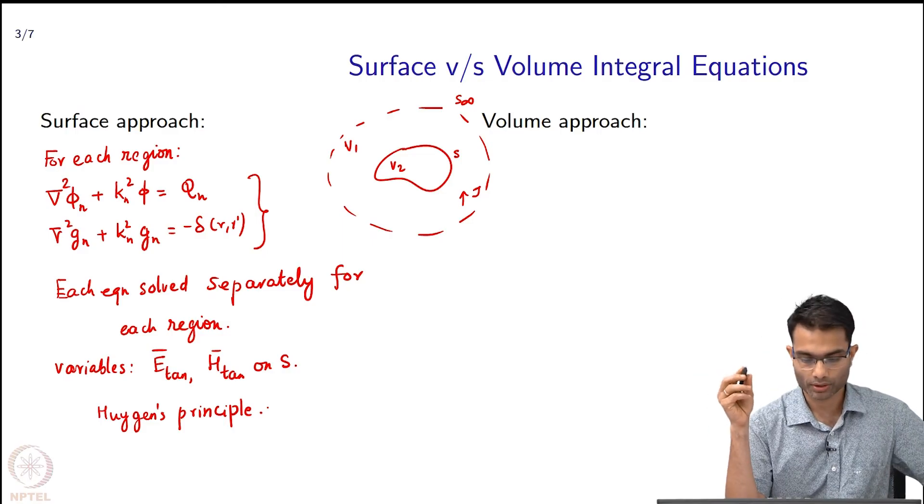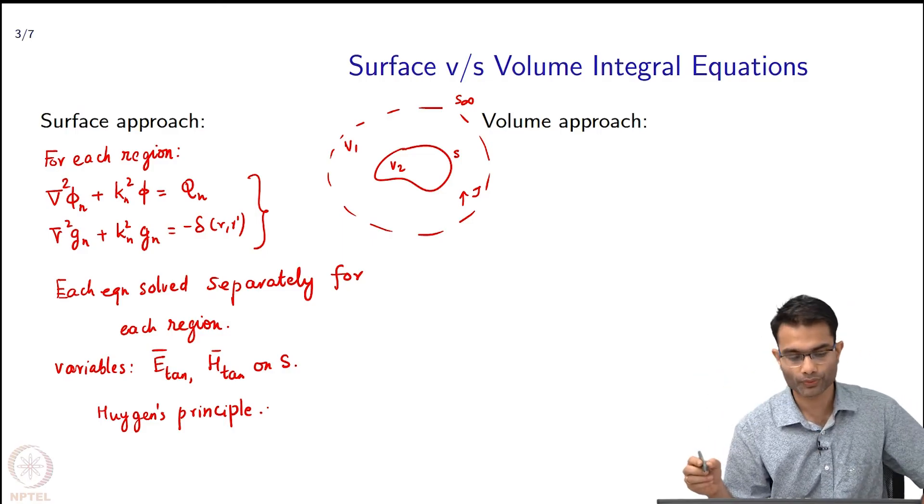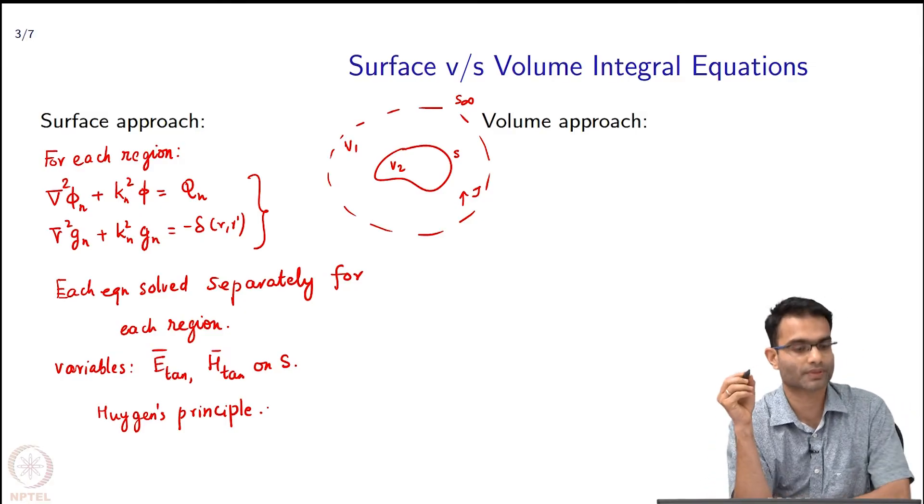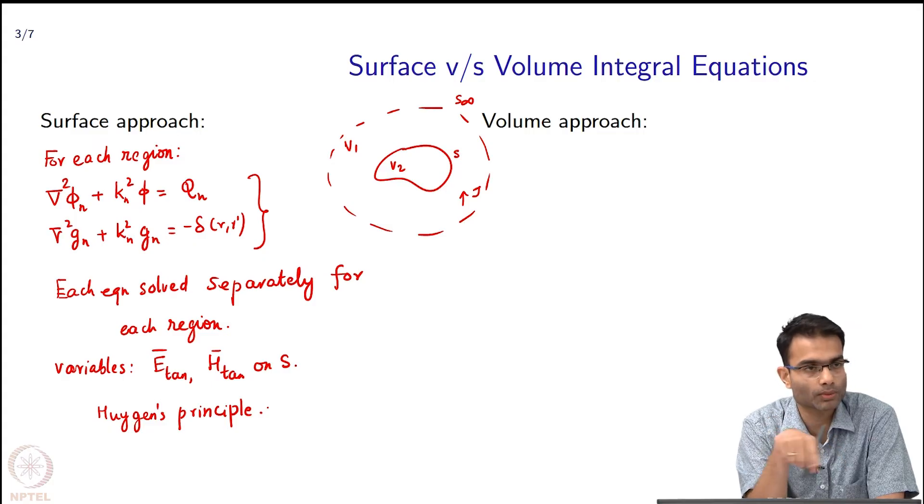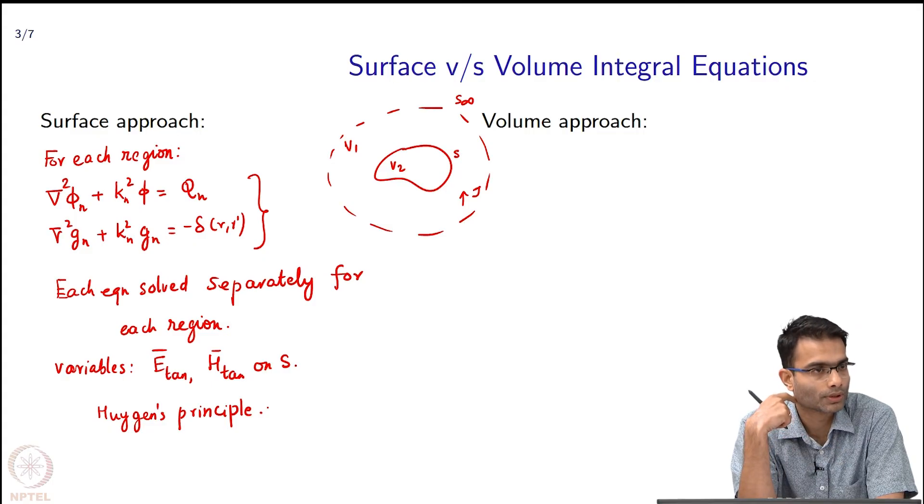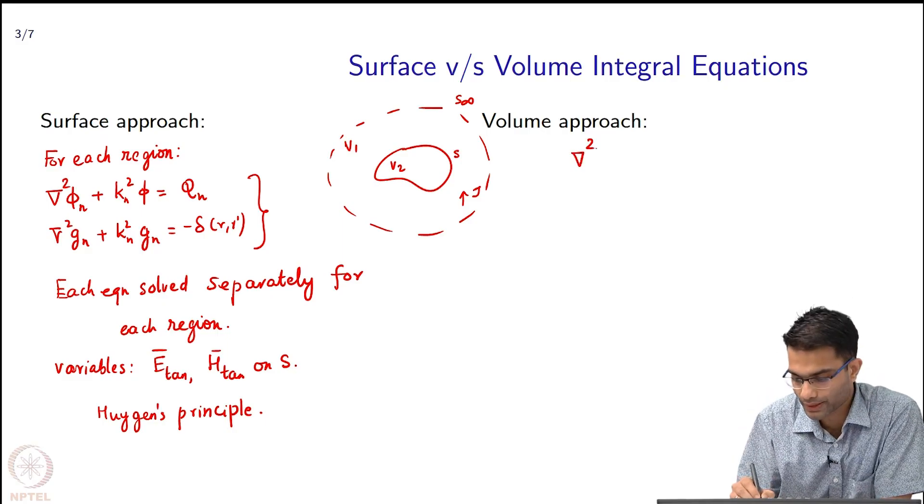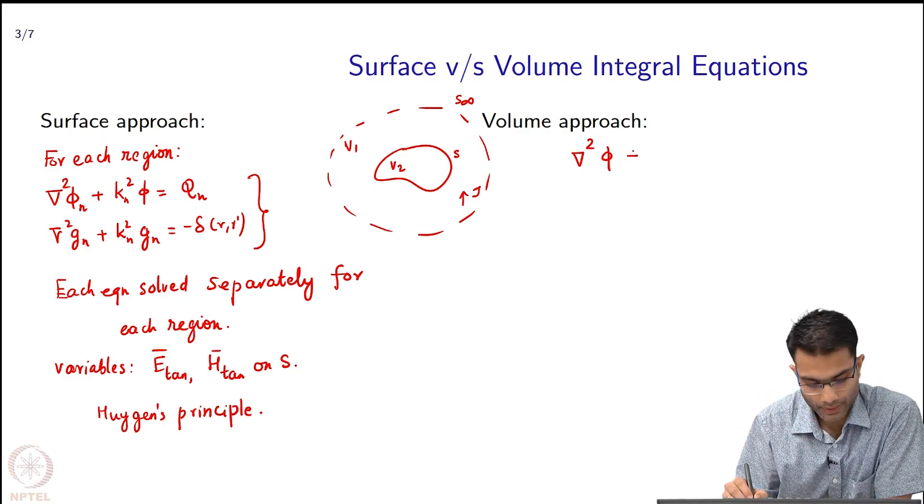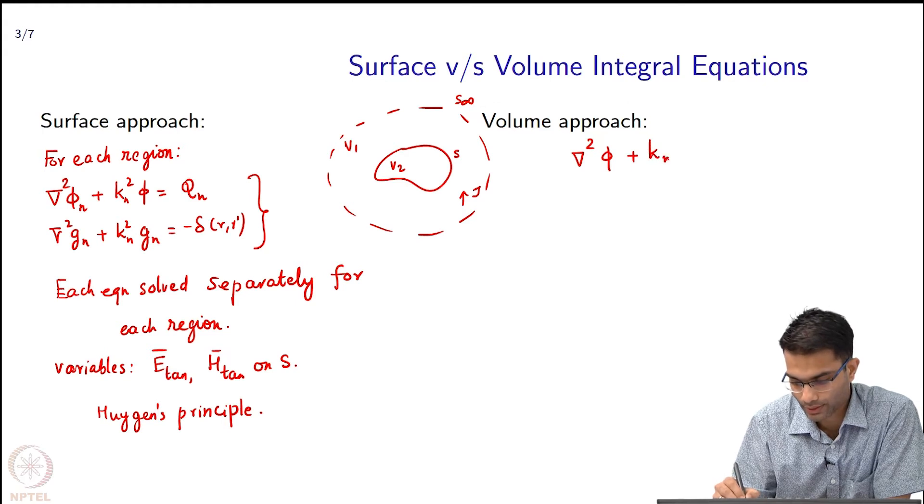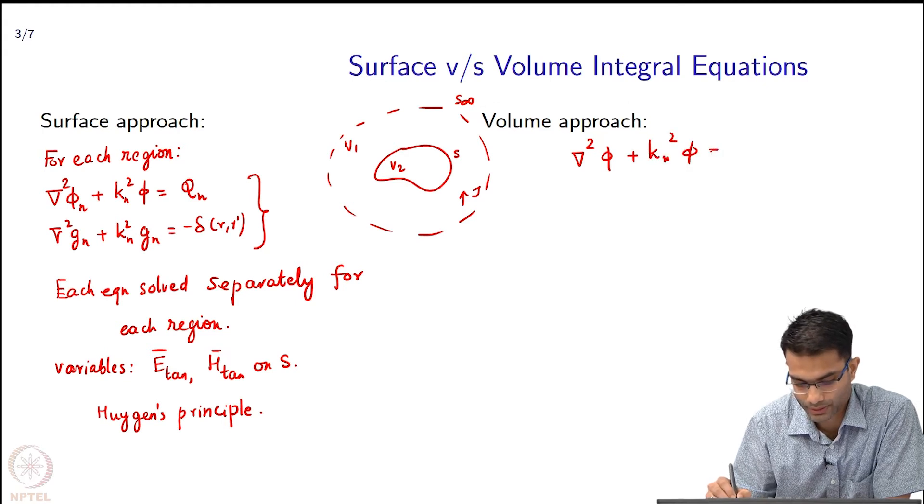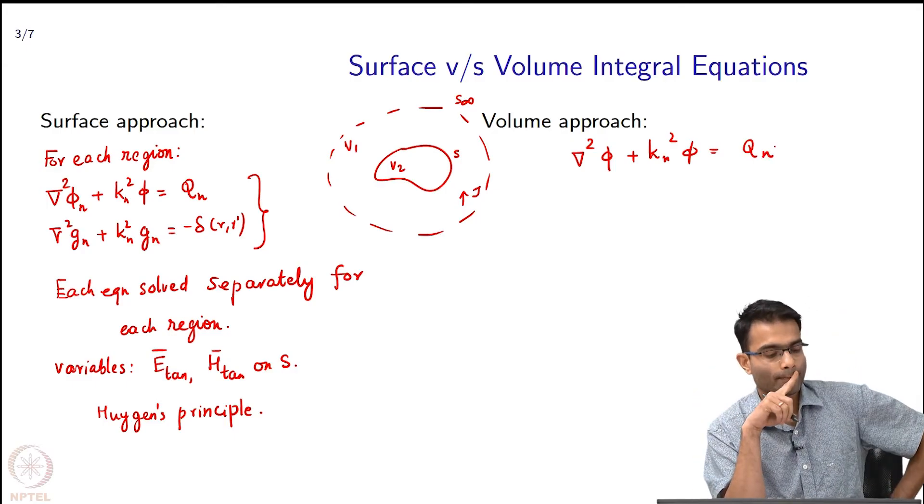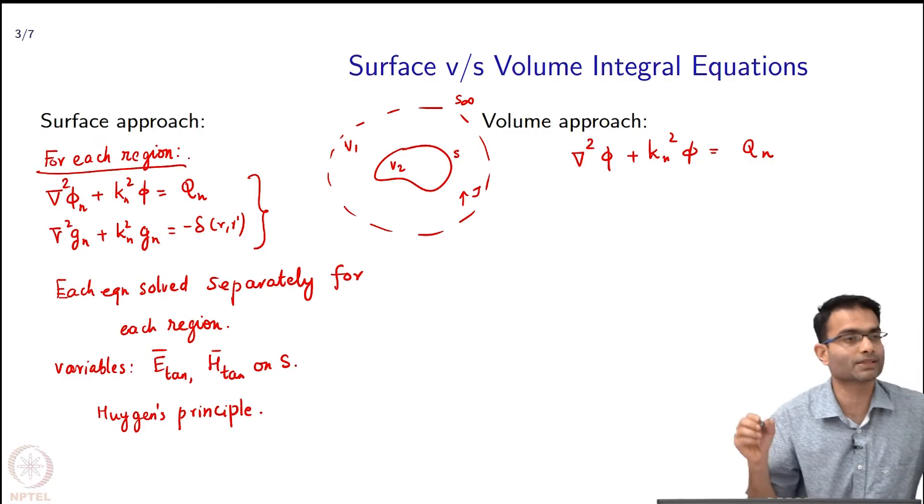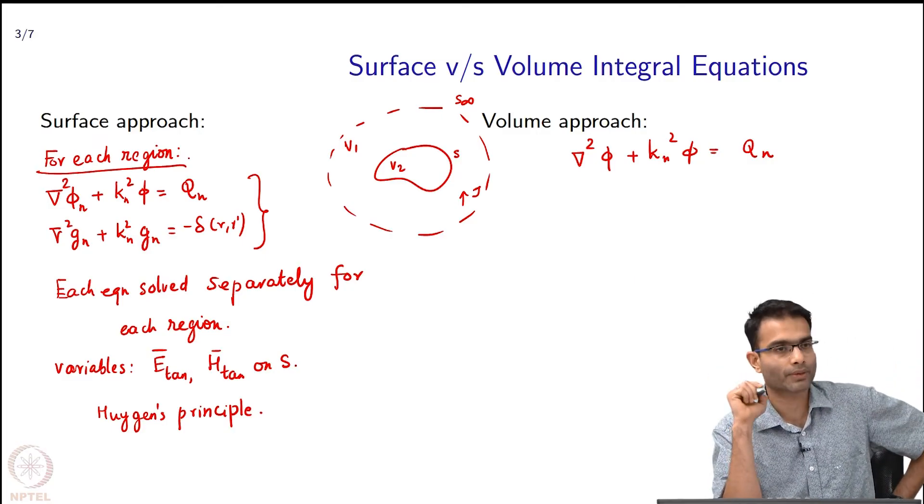This is not new. When we move to the volume integral approach, what was our starting point? Was the first step common to both? What we did there was we also wrote down ∇²φ + kₙ²φ is equal to qₙ, but here, for example, I got two equations from each region. What was the difference? How did I do it?